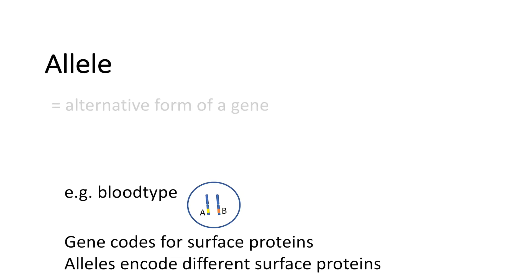If we talk about the ABO blood type, we have a gene responsible for blood type surface proteins, and we have the A-allele and the B-allele, which are different variants of one gene, and they both encode for different proteins.